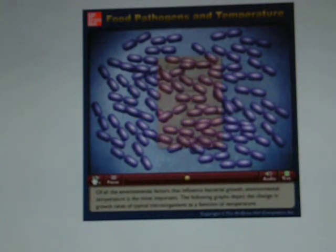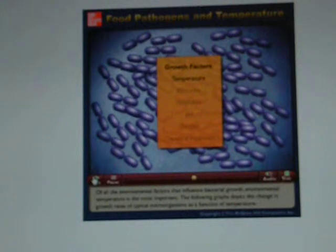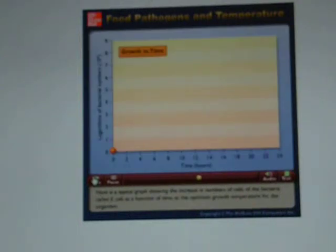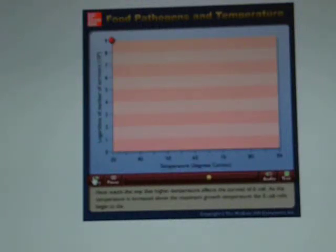Of all the environmental factors that influence bacterial growth, environmental temperature is the most important. The following graphs depict the change in growth rates of typical microorganisms as a function of temperature. Here is a typical graph showing the increase in numbers of cells of the bacteria E. coli as a function of time at the optimum growth temperature for the organism.